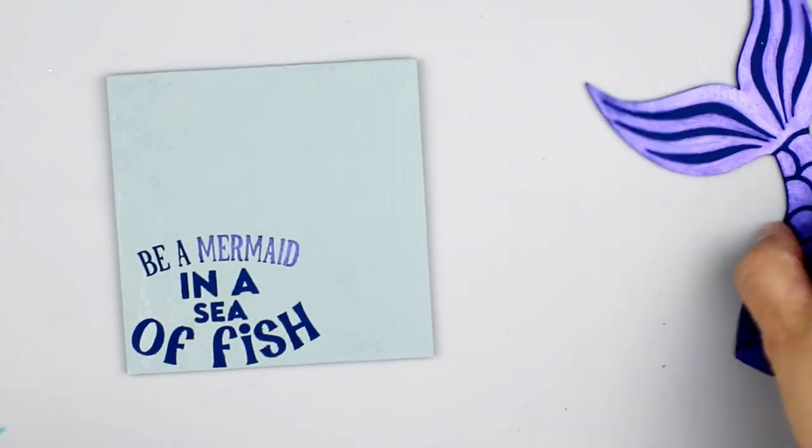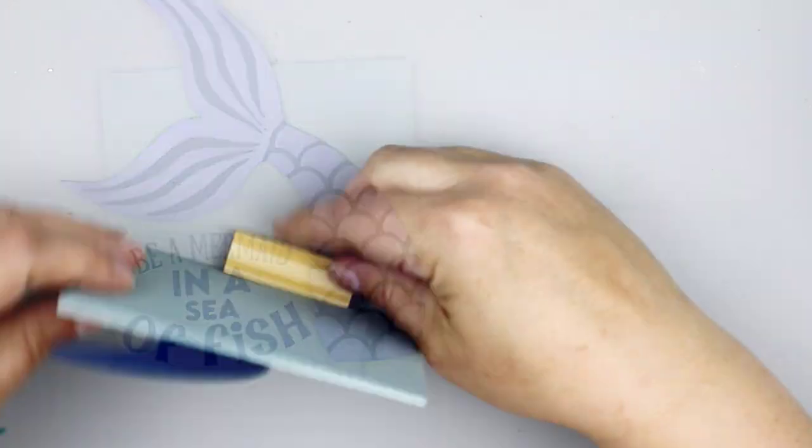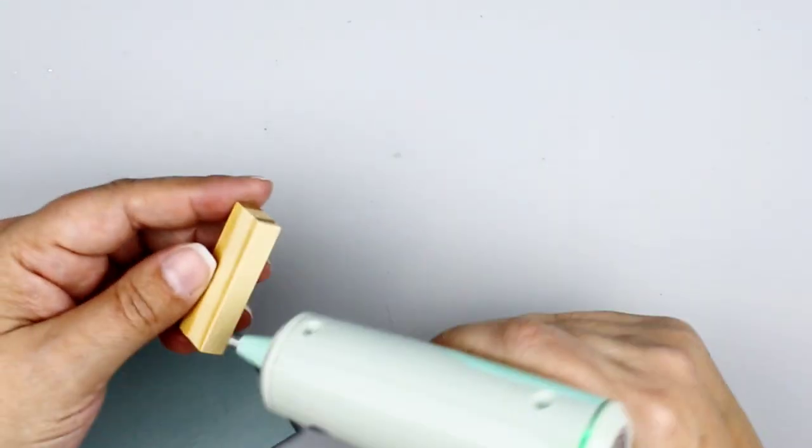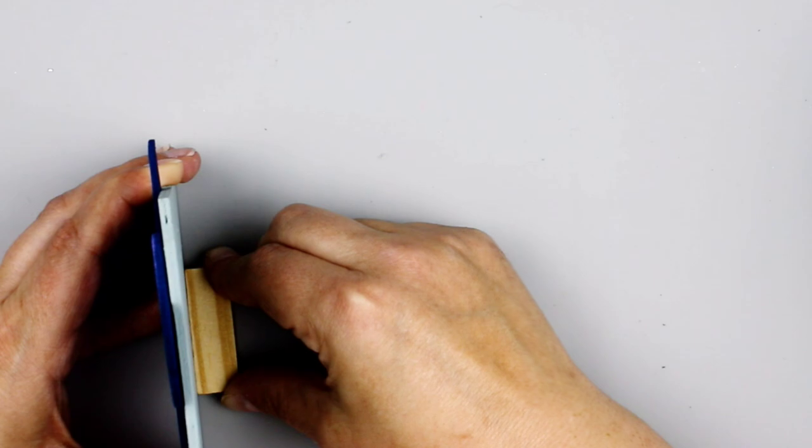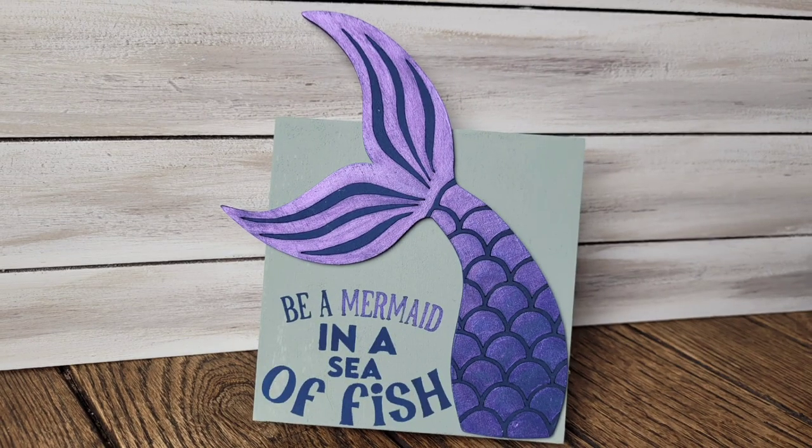And then I am just going to place my little mermaid tail there on the side and then put a Jenga block or a tumbling tower piece on the back and make it self-standing. And here's how this turned out.